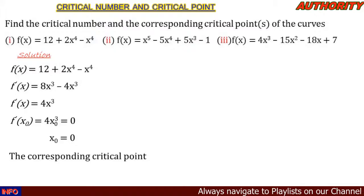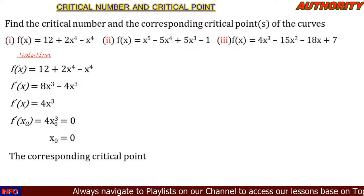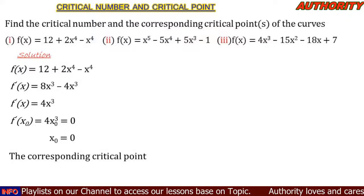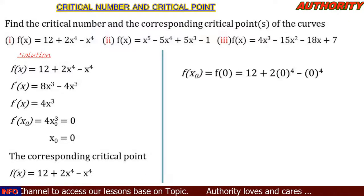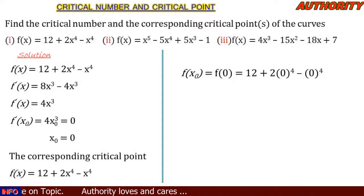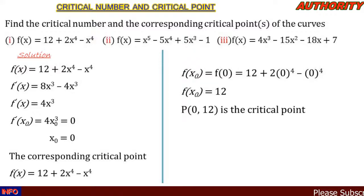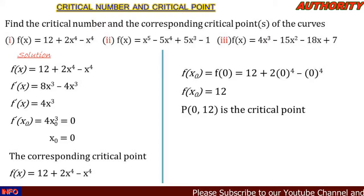Now let's find the corresponding critical point. We input the critical number into the function: f(x₀) = f(0) = 12 + 2(0)⁴ - (0)⁴ = 12. So the critical point is P(0, 12).